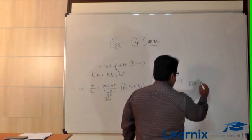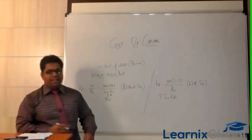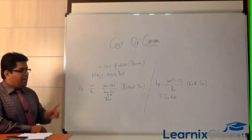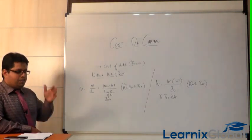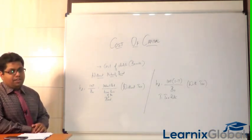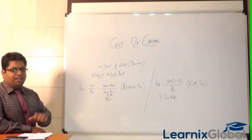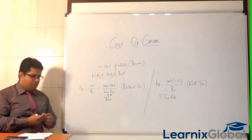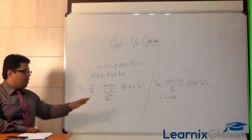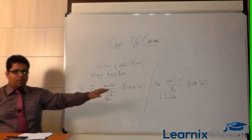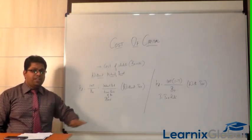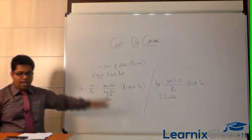The reason tax is reduced is that debt instruments have a tax advantage. Interest is paid before tax is calculated, so it reduces your taxable income and brings down the cost. These two formulas — with tax and without tax — apply when the maturity period is not given. If a maturity period is given, the formula changes further.